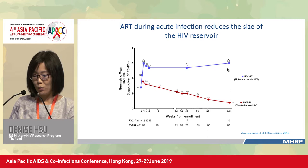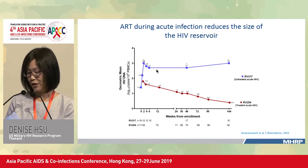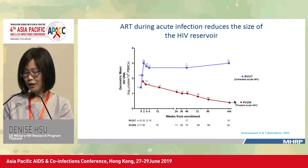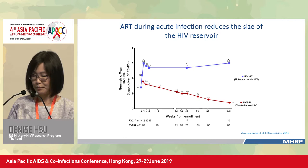Prior to ART initiation, both cohorts had similar levels of HIV DNA. Without treatment, HIV DNA increased very rapidly and then plateaued. With ART initiation, there was a rapid drop in HIV DNA reaching very low levels, with divergence between treated and untreated groups occurring early. So even though early ART does not eliminate the reservoir, it does significantly reduce its size.